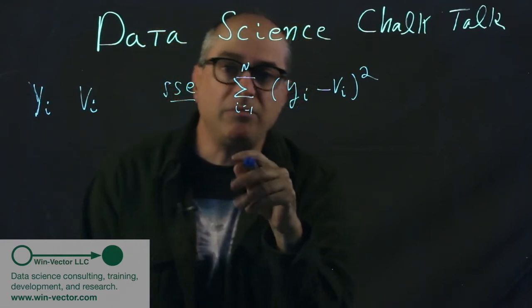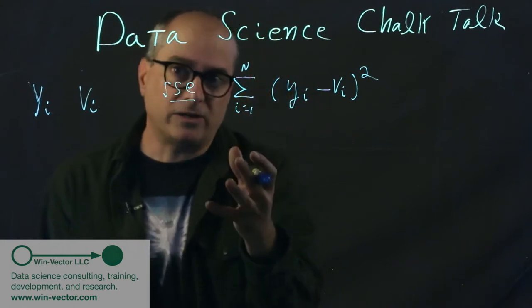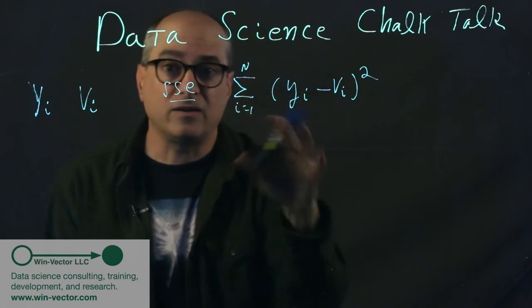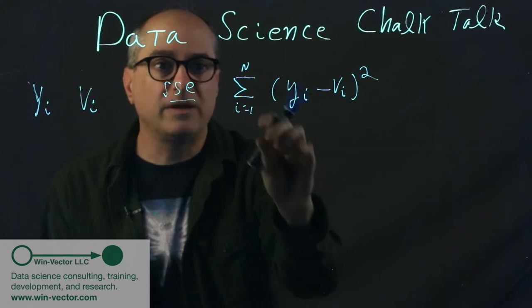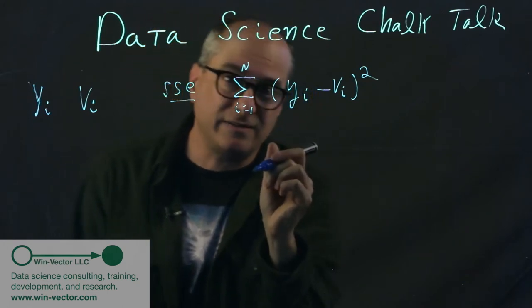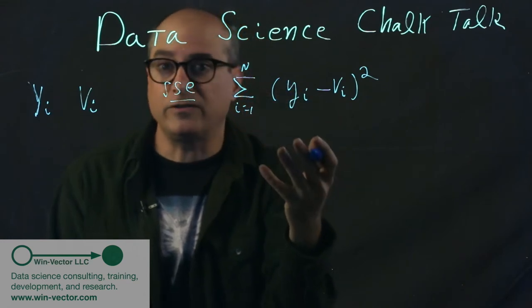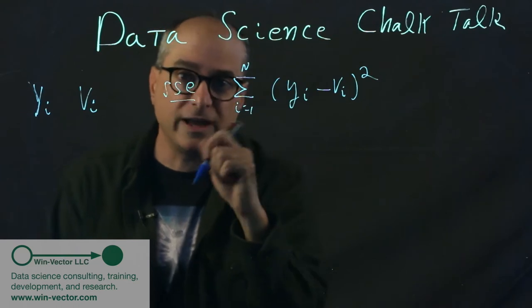Now, the problem is the SSE, well there's not a huge problem. The SSE is a great metric. However, for you and I, we are humans, we don't understand the scale or the units of it because it's in square units. So it's not in the units of the original problem. And it sums over an entire data set.